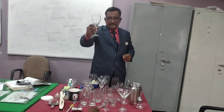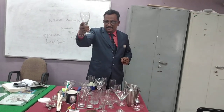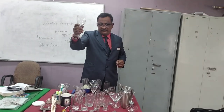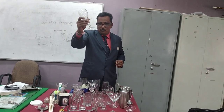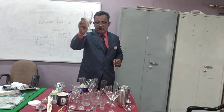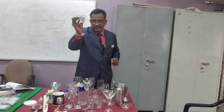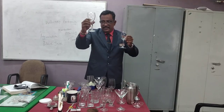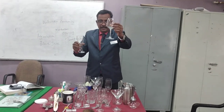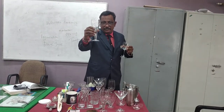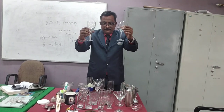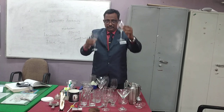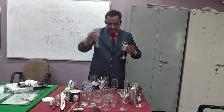This is the white wine glass. The capacity is 6 ounces and the stem is very small. Only white wine is served in this. Remember the difference: the red wine glass has a bigger stem, while the white wine glass has a smaller stem.